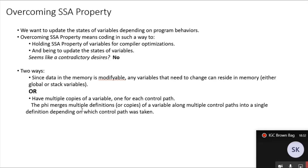Overcoming the SSA property allows us to update the state of variables depending on program behaviors, making control flow constructs possible. In order to do that, we need to code in a way that holds this property for compiler optimization while also being able to update the state of variables. We have two ways of doing this: any variable that needs to change can reside in memory — either in global or stack variables — or we can have multiple copies of a variable, one for each control flow path. The phi instruction merges multiple definitions of a variable along multiple control paths into a single definition depending on which control path was taken.